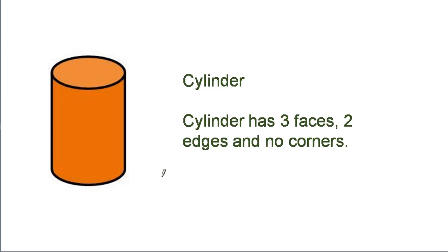Cylinder. Cylinder has three faces, two edges and no corners. The two faces of a cylinder are circles and one face is a rectangle. These are the edges.